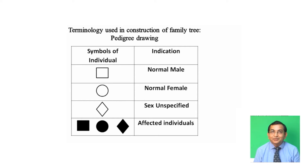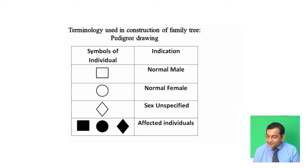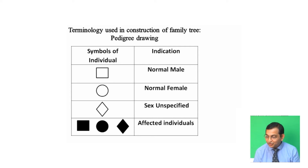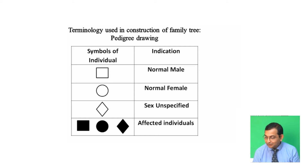It is customary to designate a normal male with a square and a normal female with a circle. Sex unspecified individuals are designated with a diamond shape, and affected individuals are shaded — whether square, circle, or diamond shape.